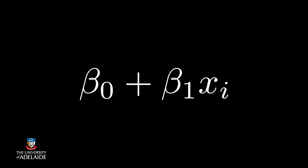Linear model: we will have a model of the form beta 0 plus beta 1 Xi for the predictors. If we add in more predictors, it looks like a standard multiple linear form.